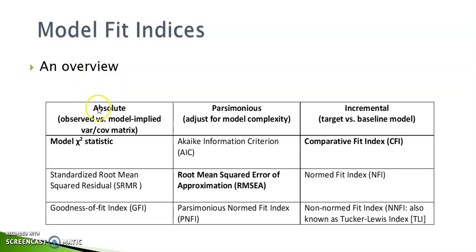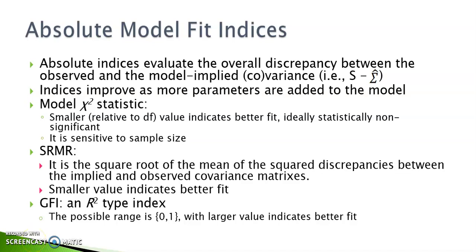In this table, I have a summary of the popular model fit indices within each of the three categories. In the first category, the absolute model fit indices, we evaluate the ability of the proposed model to reproduce the observed matrix. The model chi-square statistic is used to compare the model implied versus the observed matrices and evaluate the absolute differences between the two. A non-significant model chi-square statistic is expected to show that there's no significant difference between the two matrices. The problem with model chi-square statistic is its sensitivity to sample size. When you have very large sample size, it's very unlikely for your chi-square to be statistically non-significant.